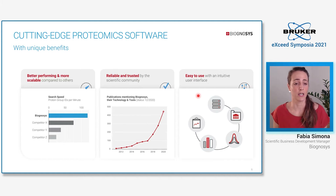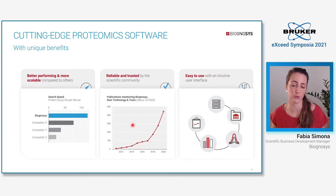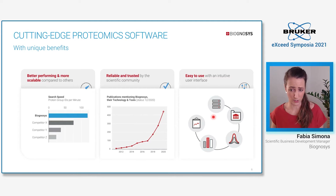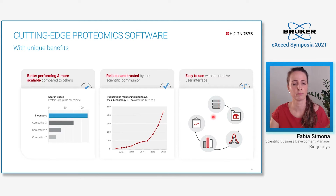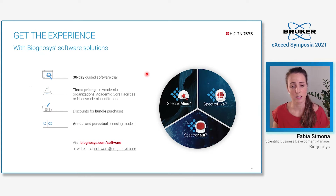Our software provides unique benefits compared to competitors, delivering high performance and scalability. As such, they are trusted by the scientific community, and we are excited to see a steep increase over the past years in the number of publications featuring Biognosys technology and tools. Part of this success is also given by the ease of use of our software, which has an incredibly intuitive user interface. If you would like to try out our software, please contact us at software@biognosys.com. We offer trial licenses, tiered pricing, bundle discounts, as well as different licensing models.